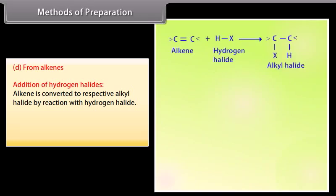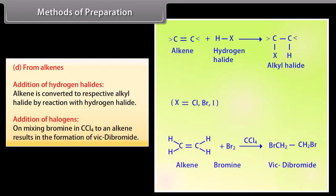Methods of Preparation. From Alkenes. Addition of Hydrogen Halides: Alkene is converted to alkyl halides by a reaction with hydrogen halide. Addition of Halogens: On mixing bromine in CCl4 to an alkene, it results in the formation of vicinal dibromide.